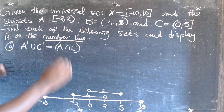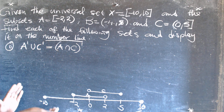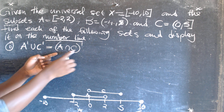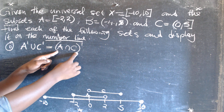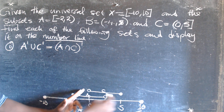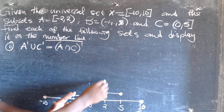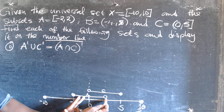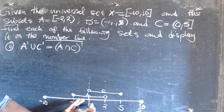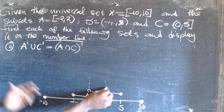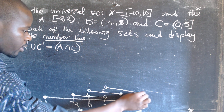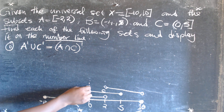After showing these two sets on the number line, we can find A intersection C complement. Before we find the complement, we need to know A intersection C. This is set A and this is set C — the intersection is here. This is A intersection C. Now we apply the complement outside this one, so all the elements outside zero to two.